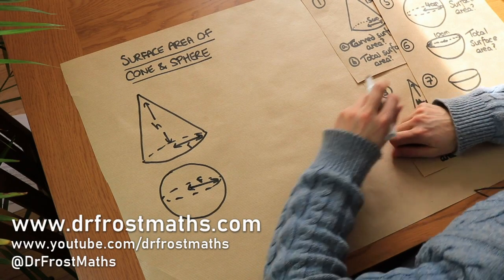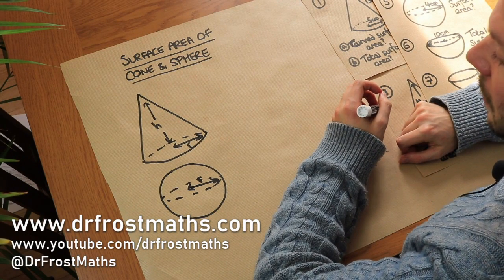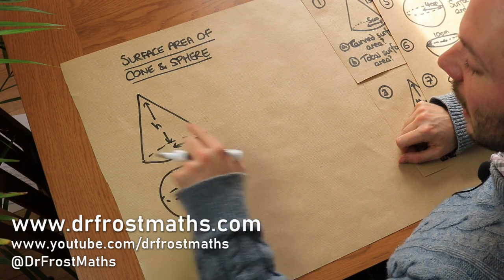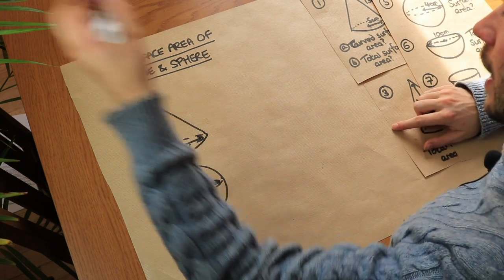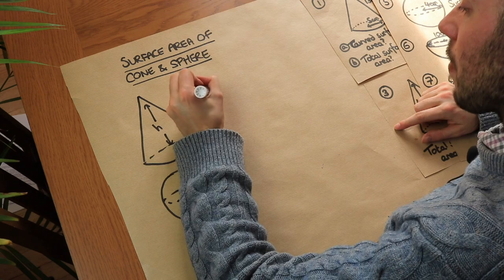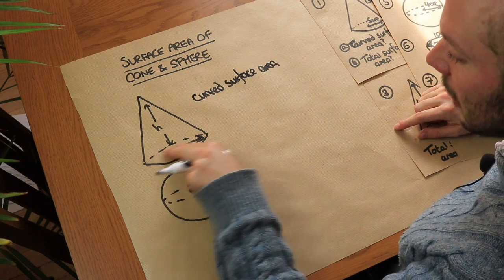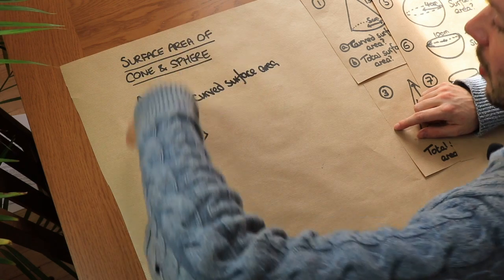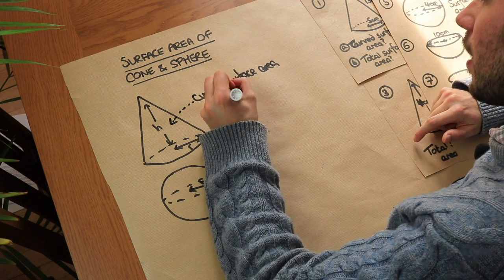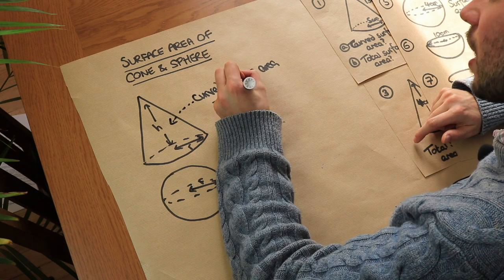Hello and welcome to this video on the surface area of a cone and a sphere. Here's a cone with height h and radius r. The curved surface area — and by curved surface area I don't mean the flat bit at the bottom, I mean this curved surface coming up — is equal to pi times r, the radius, times l.